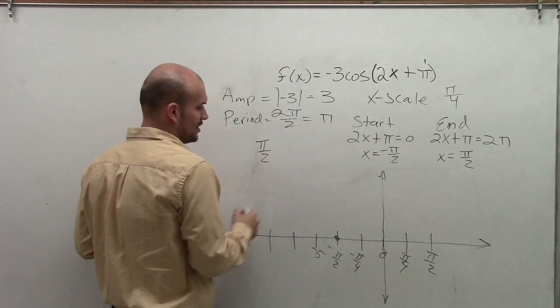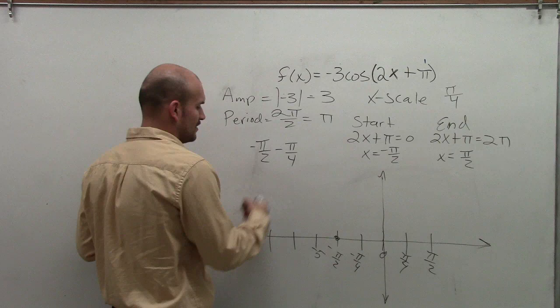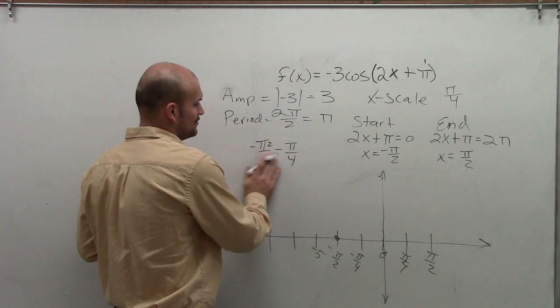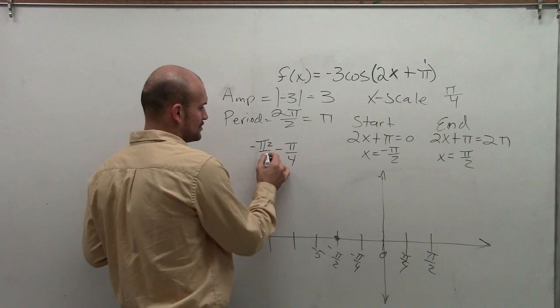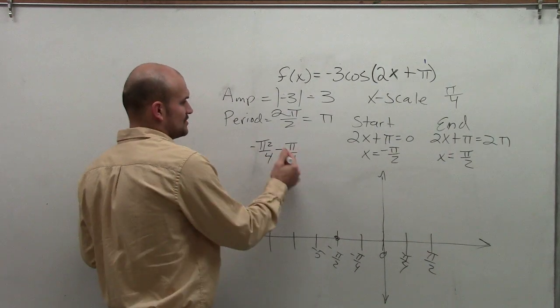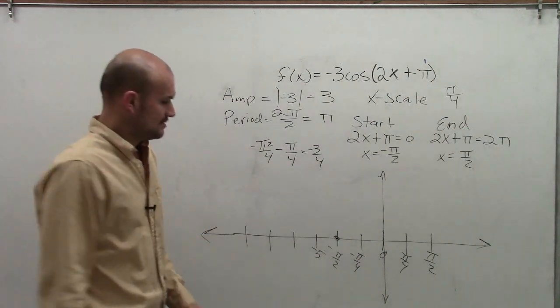So I have -π/2 minus π/4. So I'm going to break this down to the new denominator. So multiply by 2/2, or 2/4. So subtract that, I'm going to have -3/4. Sorry about that.